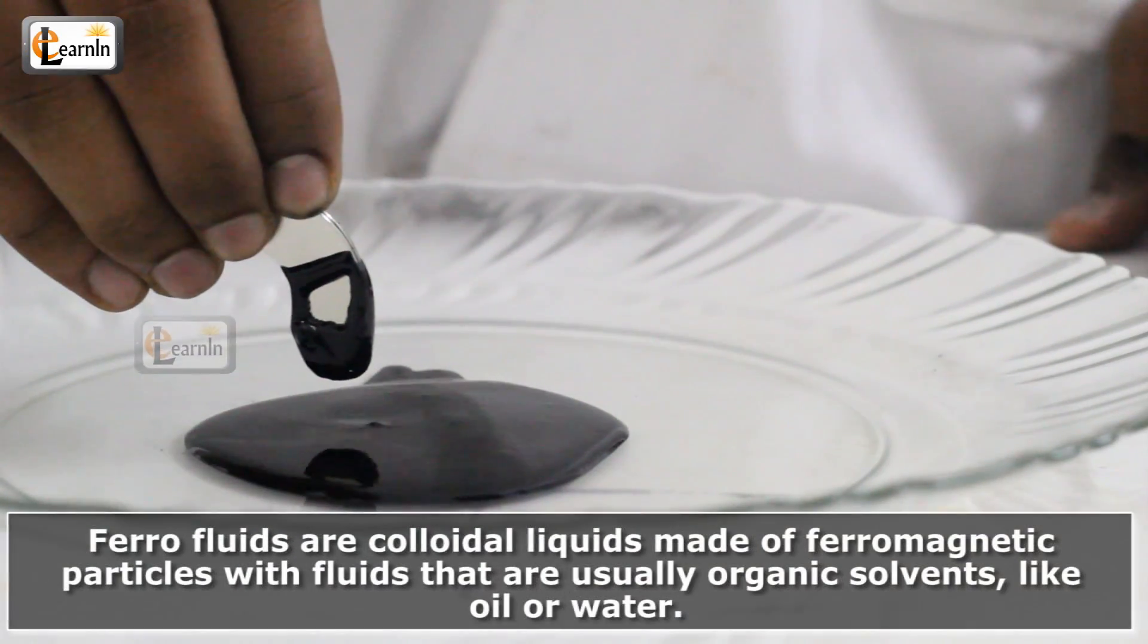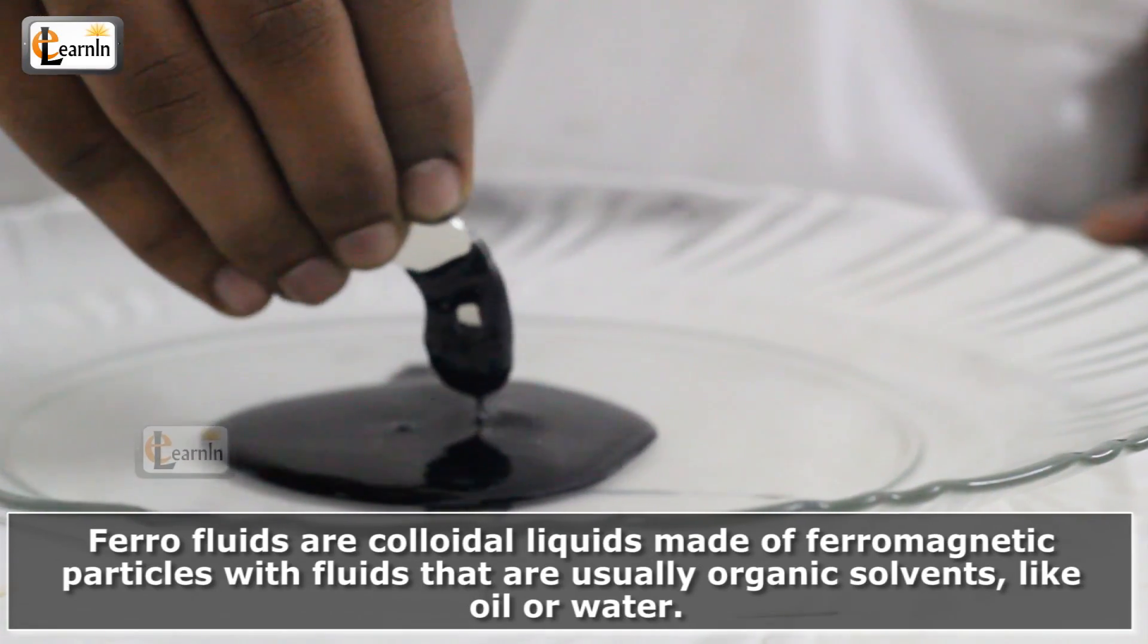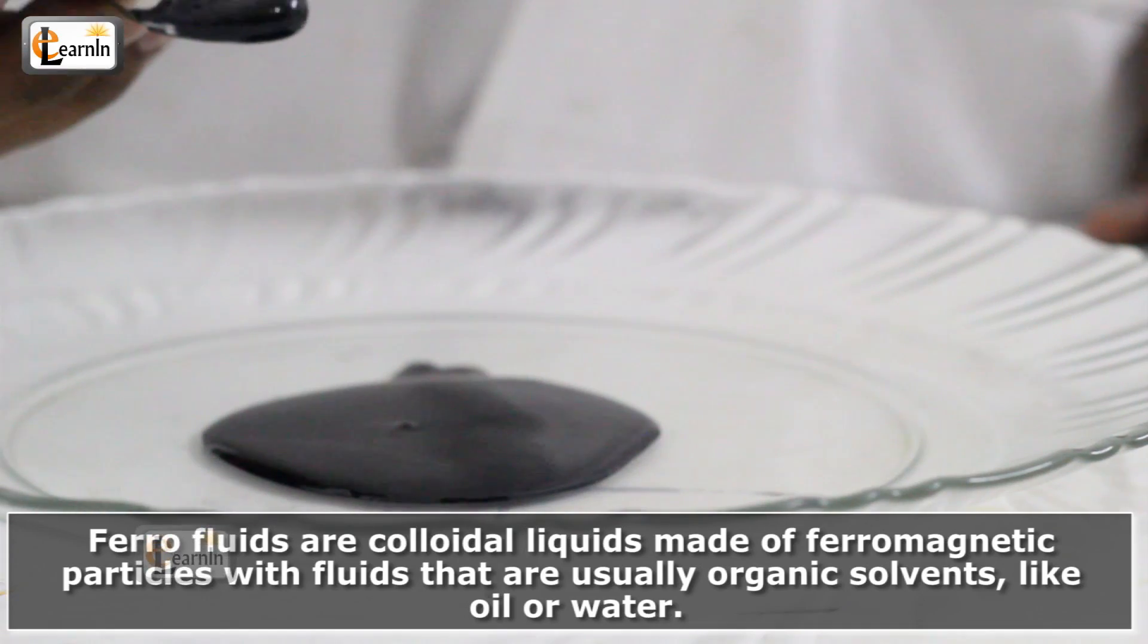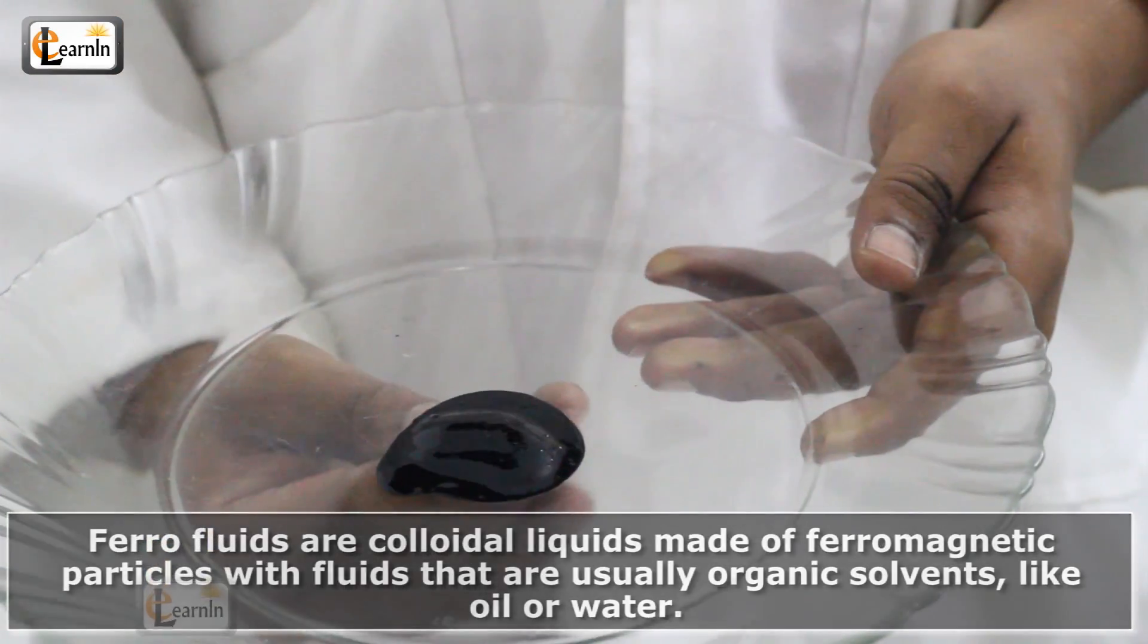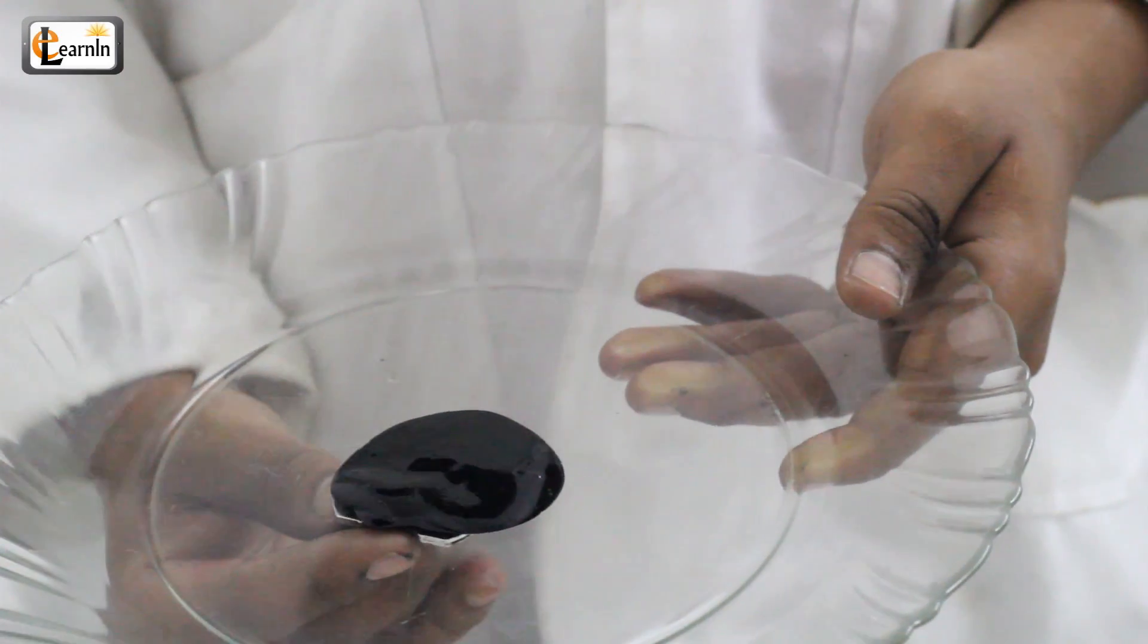Ferrofluids are colloidal liquids made of ferromagnetic and ferrimagnetic particles in fluids that are usually organic solvents like oil or water. This is the phenomenon behind the mysterious raising and crawling of this ferrofluid over the magnet.